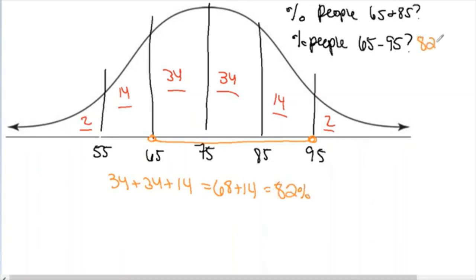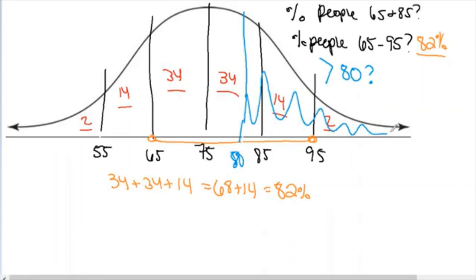So 82% of people travel between 65 and 95 miles per hour. The 34-14-2 rule is very helpful, but the problem comes when a question doesn't land exactly on a standard deviation landmark. For example: how many people go above 80 miles per hour? That score falls between the mean and +1 SD, and our 34-14-2 breakdown can't give us that. Calculus majors have generated a full table for all in-between scores, which we'll learn to read in the next video.